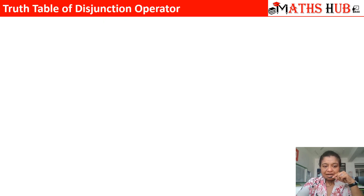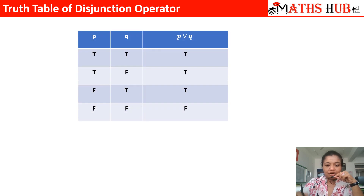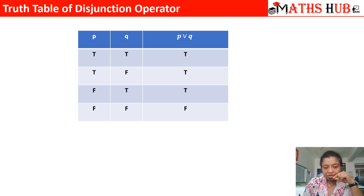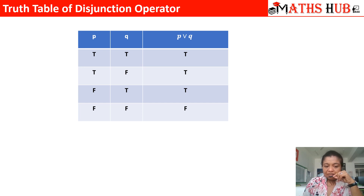In the next slide let us understand the truth table for the disjunction operator. The inputs are P and Q and the output is P or Q. The possible inputs are: both P and Q can be true, one of them is true and one is false, or both of them are false. When both are true, the result is true. Even when one of them is true, that also gives a true result.